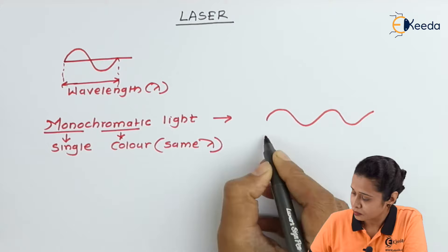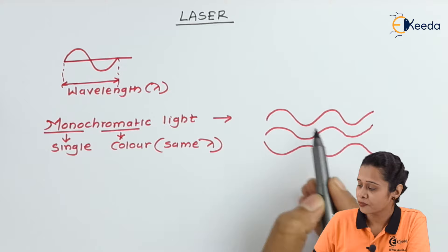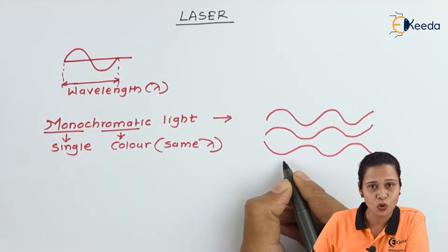Now, in these three diagrams we have three waves with the same wavelength. The wavelength of light is the same. That's why we can say this is a monochromatic source of light.